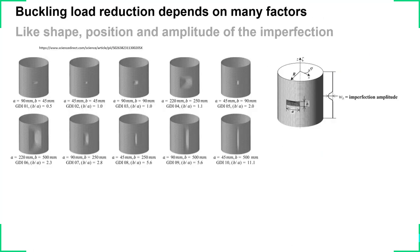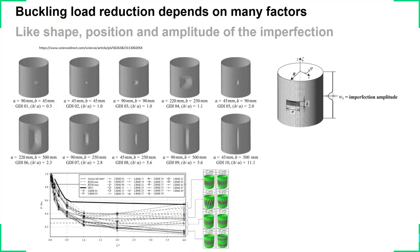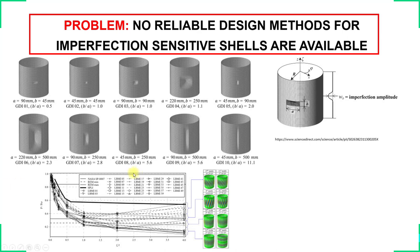The problem with imperfections is that the buckling load reduction depends on the imperfection. We can scale the imperfection by changing its shape, position, or amplitude. Because there are so many factors to consider, you get basically an infinite amount of possible design buckling loads, which is not helpful — we want a simple, reliable design method.